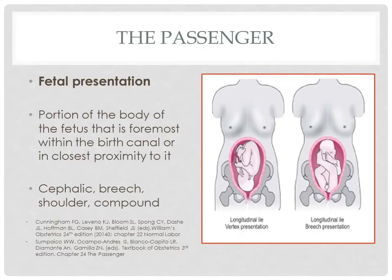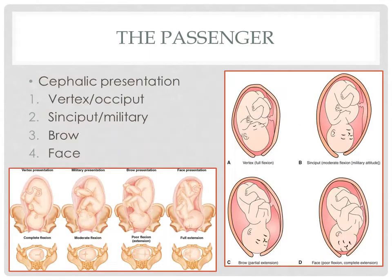Fetal presentation is the portion of the body of the fetus that is foremost within the birth canal or in closest proximity to it. It can be cephalic, breech, shoulder, or compound. This fetus is in longitudinal lie and cephalic or vertex presentation because the head is foremost within the birth canal. The next picture shows breech presentation because the breech is foremost. Under cephalic presentation, we have different types: vertex, syncyput, brow, and face.